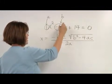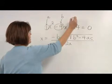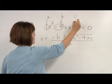a is 1, b is negative 9, and c is the constant 14.